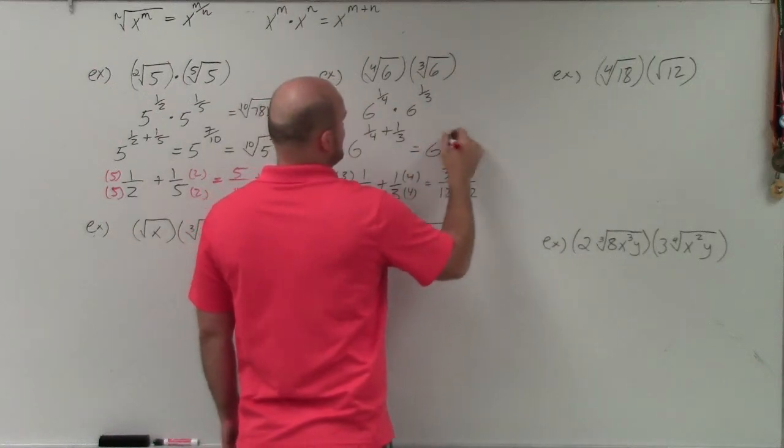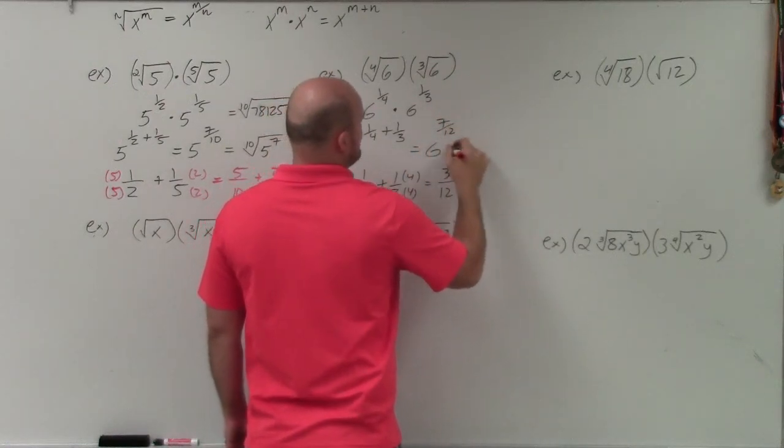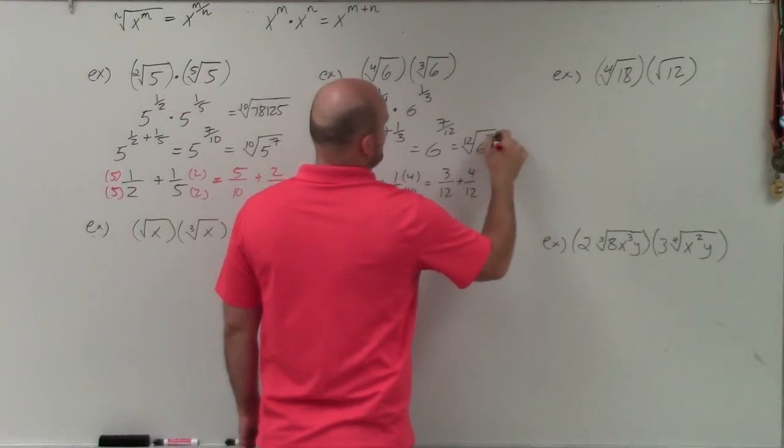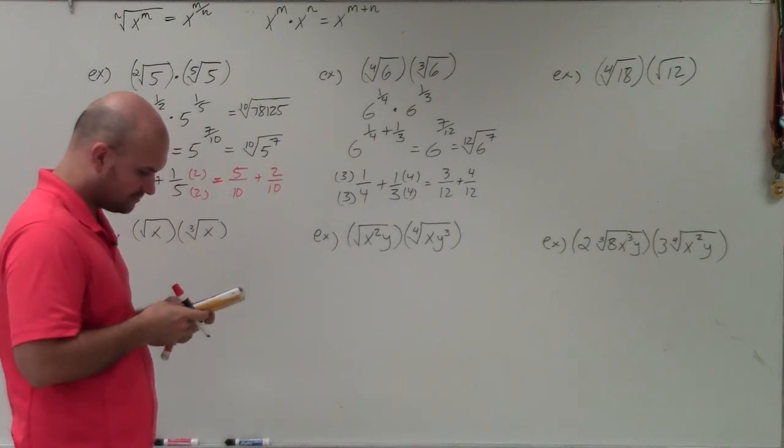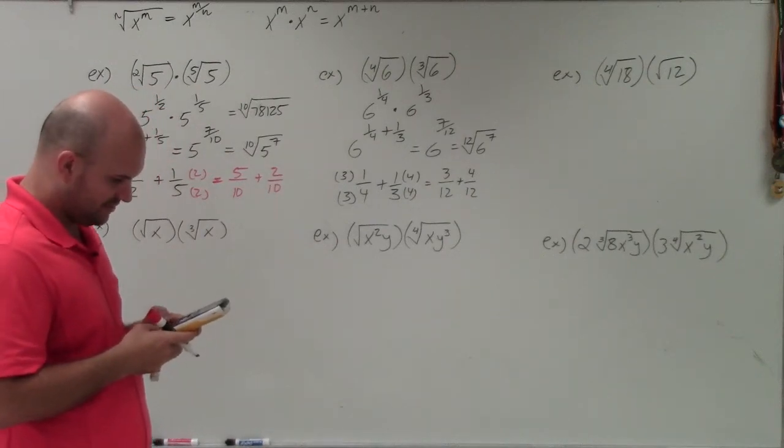So that's equal to 6 to the 7 12ths, which is equal to the 12th root of 6 to the 7th power, which, again, we can simplify 6 raised to the 7th power.